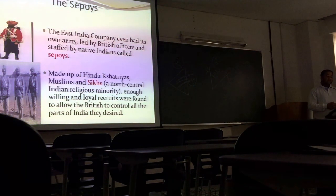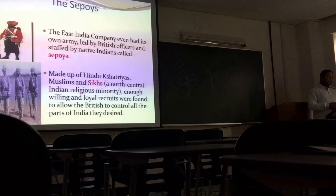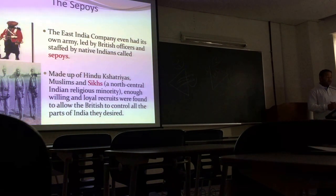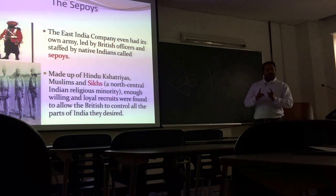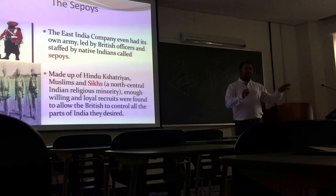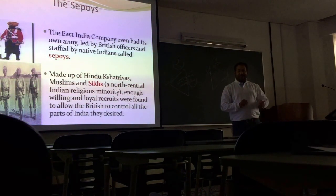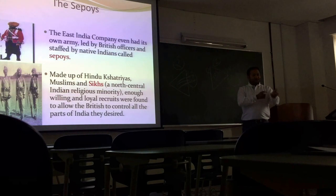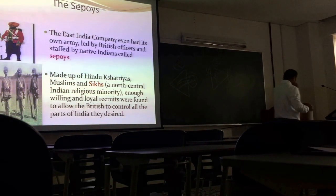The Sepoys — we call it Sipahi, which means soldier. The East India Company even had its own army, led by British officers and staffed by native Indians called Sepoys. You see, one leader can command thousands of soldiers. So they made this political structure — officers from England, and they took native Indians as soldiers. The native people would control their own people because they know each other in their areas, but all orders come from England and the officers are English. One order, and a thousand people will act. That's how they maintained control.